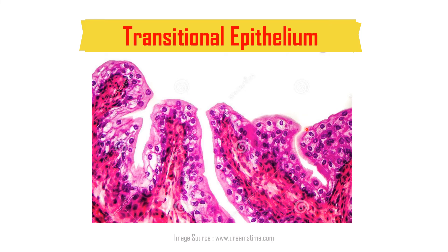Coming to transitional epithelium, otherwise known as urothelium. The shape of the topmost layer changes over time — when the bladder is full it is flattened, when relaxed or empty it is rounded. To differentiate this from stratified squamous: from the basement membrane, the cells are arranged so that even in the topmost layer you can see rounded nuclei — this is the typical feature. Sometimes binucleated cells with two nuclei in the same cell may also be present. This epithelium is present in the kidney, ureter, and urinary bladder.